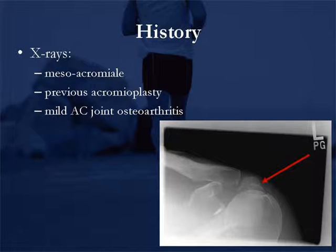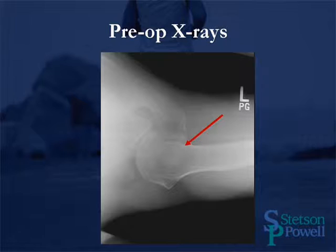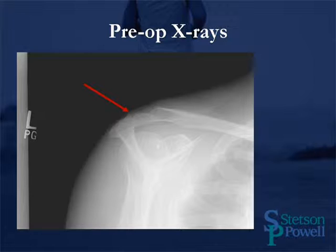Here you see an x-ray of the left shoulder, including the mesoacromiale, which is indicated by the red line. The patient also had a previous acromioplasty, and he also has some mild AC joint osteoarthritis. In addition, he also had an axillary view, which also shows the mesoacromiale, indicated by the red line. The third x-ray seen here is the supraspinatus outlet view. You can see the previous acromioplasty that had been performed, also with the os acromiale evident by the red line.